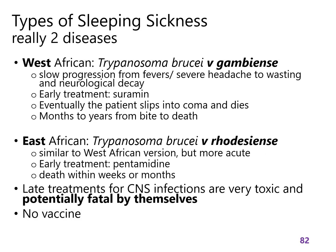Once the central nervous system infection happens, the treatments needed are incredibly toxic — they must cross the blood-brain barrier to get where the trypanosomes are. Those treatments themselves are potentially fatal. There's no vaccine, so prevention of the sleeping sicknesses is entirely about preventing bites from a tsetse fly.